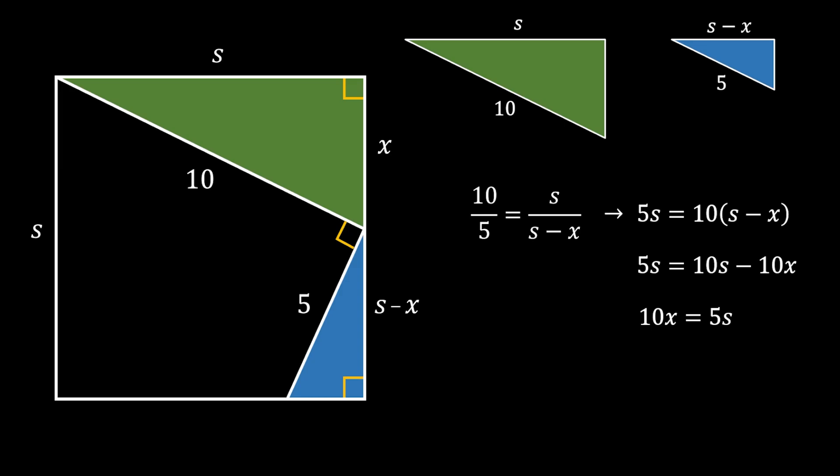Now we can simplify by dividing both sides with 5 and we will finally get that X must be equal to the half of the side of the square.